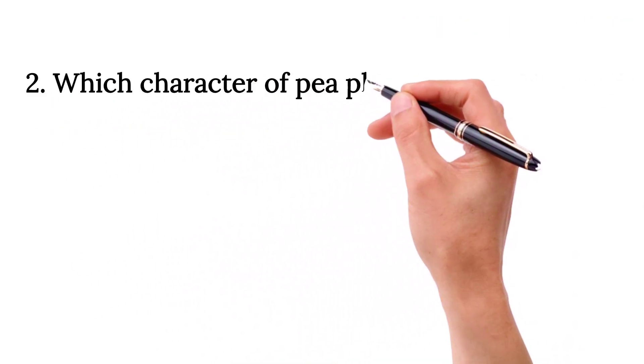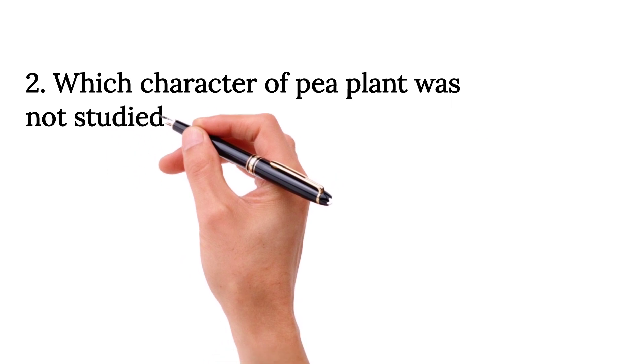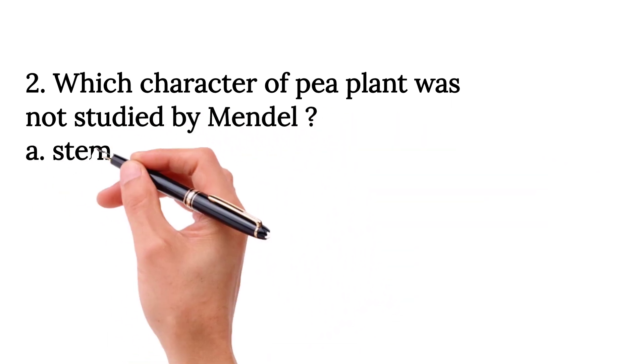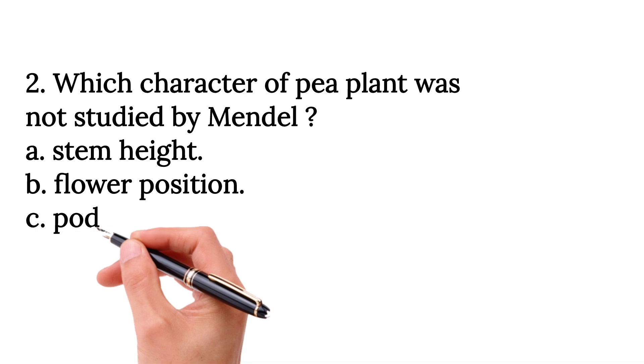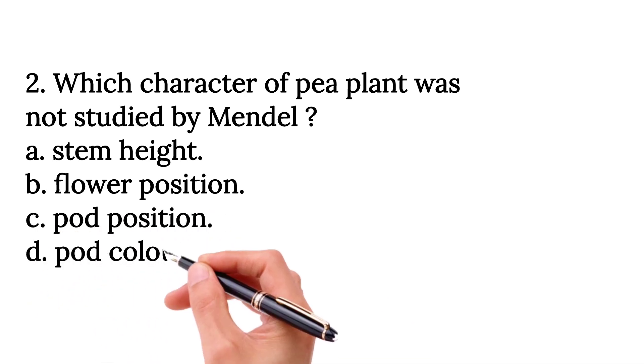Which character of pea plant was not studied by Mendel? Option A, stem height, Option B, flower position, Option C, pod position, and Option D, pod color.